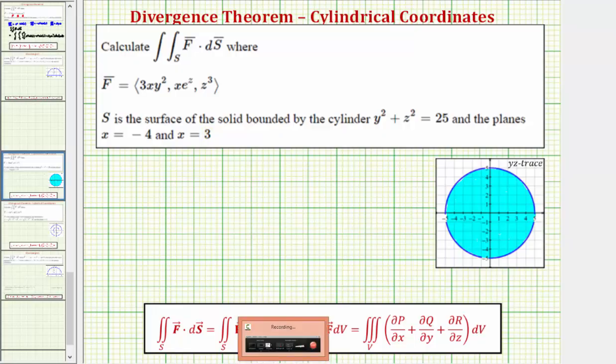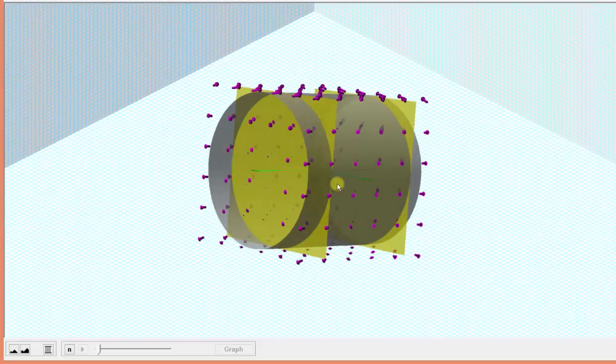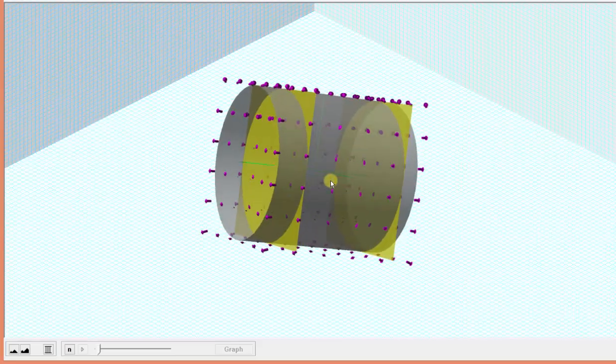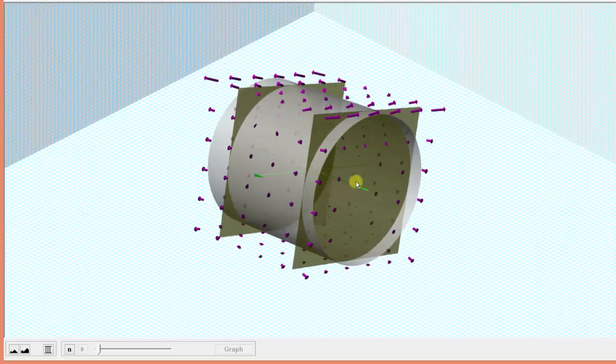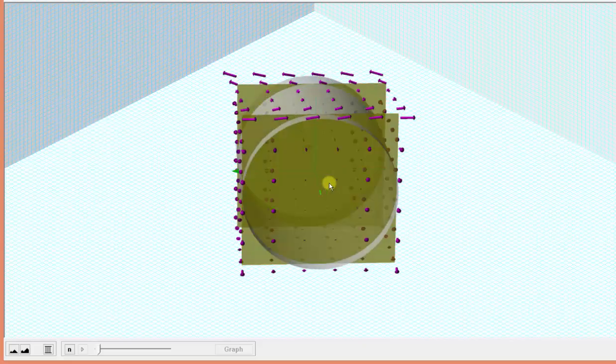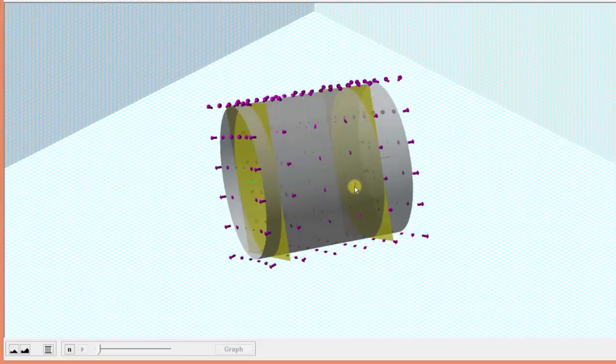Let's first look at this graphically. The surface S is the surface that bounds the cylinder between these two yellow planes which are x = -4 and x = 3. The vector field F is graphed in purple, and therefore the value of the flux integral will give us the net flow across the surface of this cylinder.